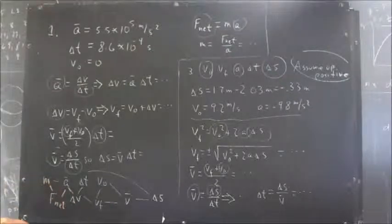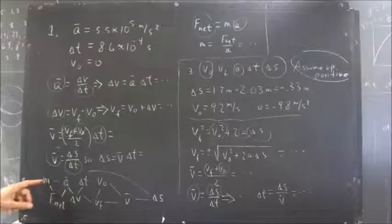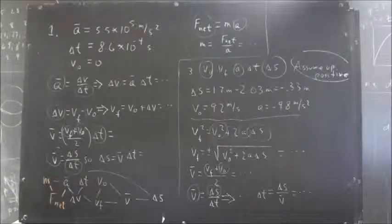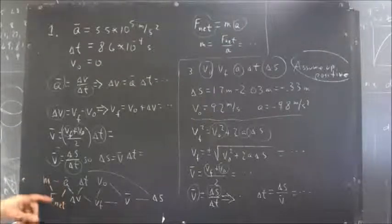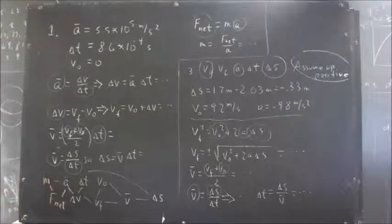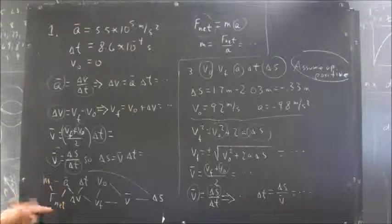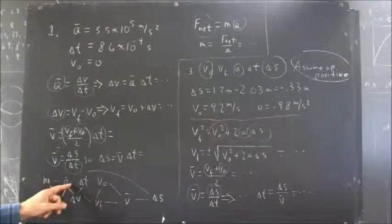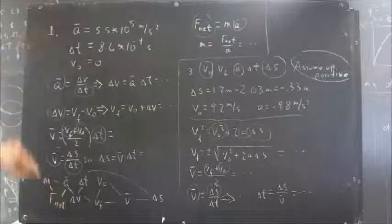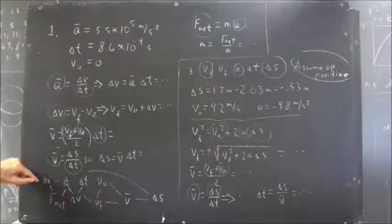And then, we can put net force and mass together with our acceleration, because net force is mass times acceleration. And now we understand that if we know any two of these, we can find the third. We're given the net force. We've got the acceleration that was actually given, so we easily find the mass.